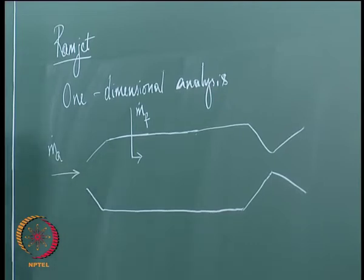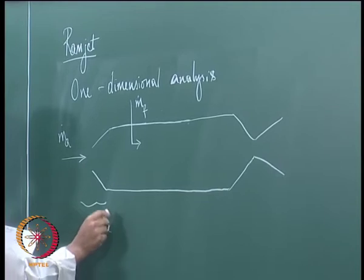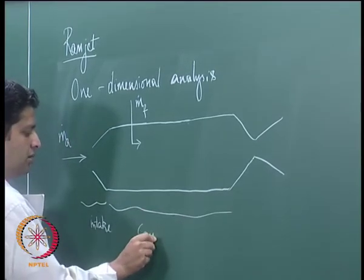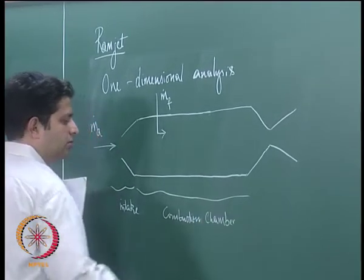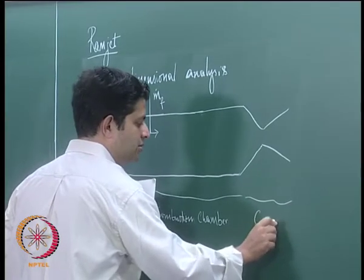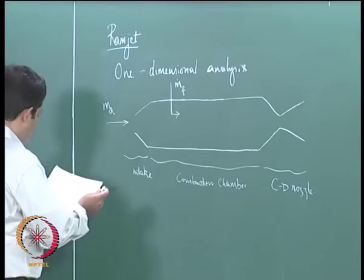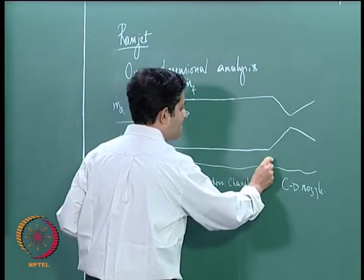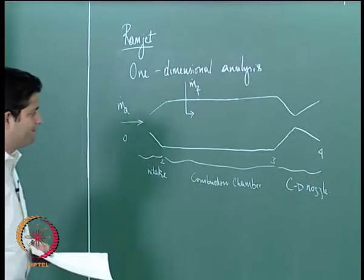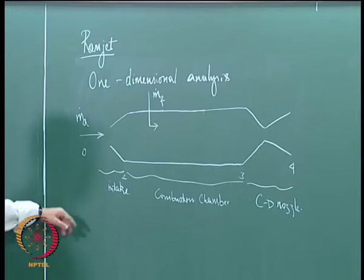This is the schematic of a ramjet. You have air coming in from the left and fuel added. This portion is the intake, all this is the combustion chamber, and this is the convergent-divergent nozzle. Now let me indicate points here — I will call this 0, this 2, 3, and 4. Correspondingly I will put this information on a T-s diagram to show what happens to the cycle.